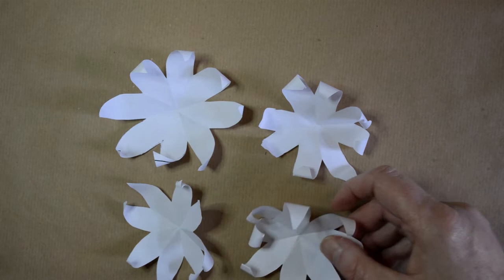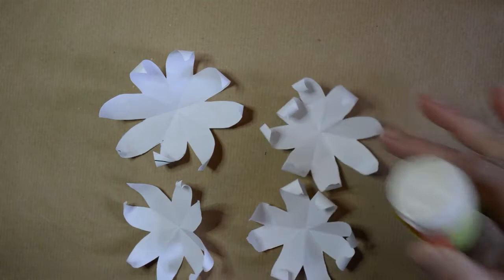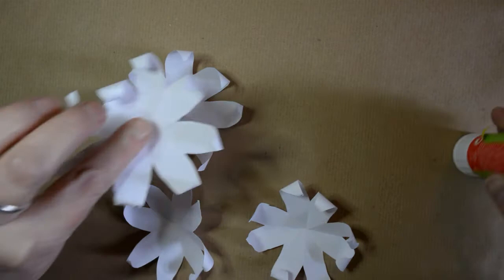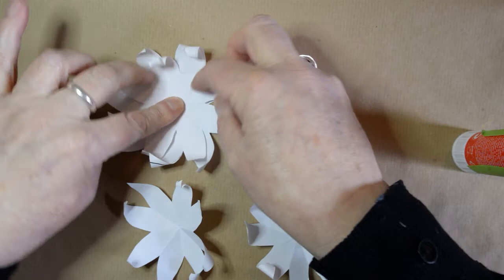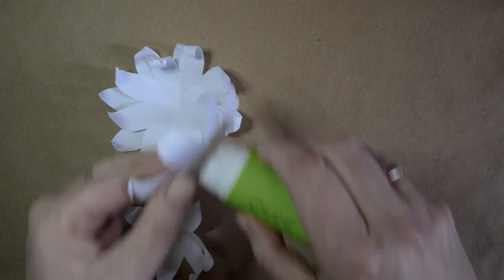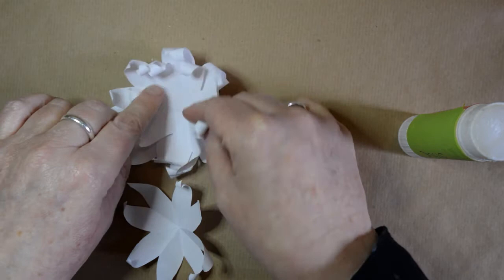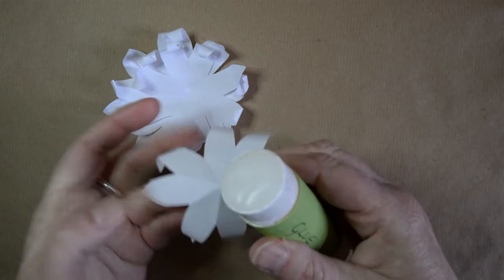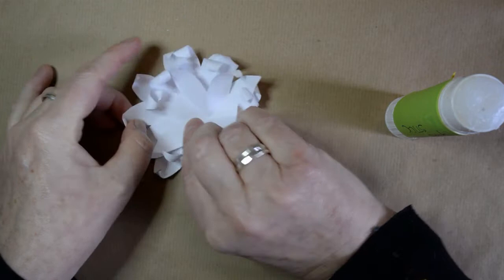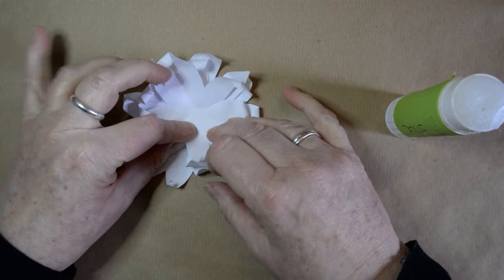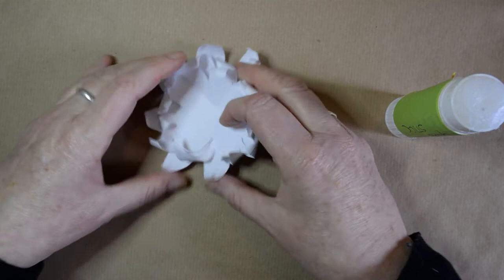You assemble them, gluing them together, putting a dab of glue at the base of each one. And then just offsetting the petals slightly so that it gives a fuller effect. Put that one there and lastly this one. Looking pretty already. I need to do the centre of the daisy now.